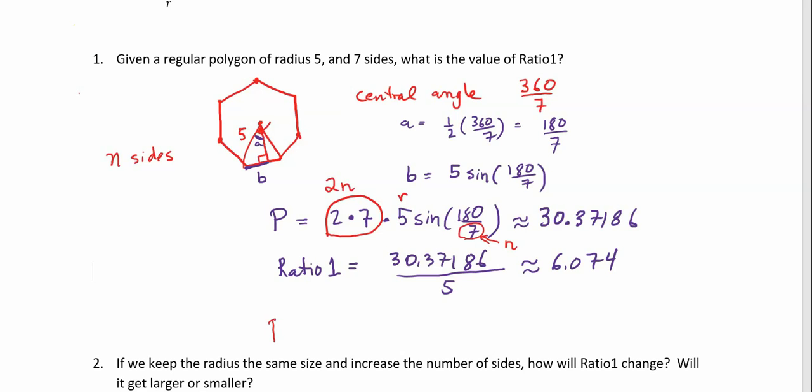That in general, the perimeter of any polygon is going to be equal to 2N times R times the sine of 180 over N. So, this is the formula, and this is all multiplication. This is the formula for the perimeter of any regular polygon.